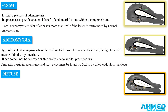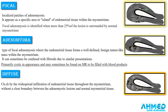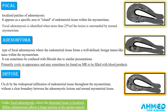Adenomyoma can sometimes be confused with fibroids due to similar presentation. It is primarily cystic in appearance and may sometimes be found on MRI to be filled with blood products. Diffuse adenomyosis is characterized by widespread infiltration of endometrial tissue through the myometrium without a clear boundary between the adenomyotic lesions and normal myometrial tissue, affecting a large portion of the uterine muscle.